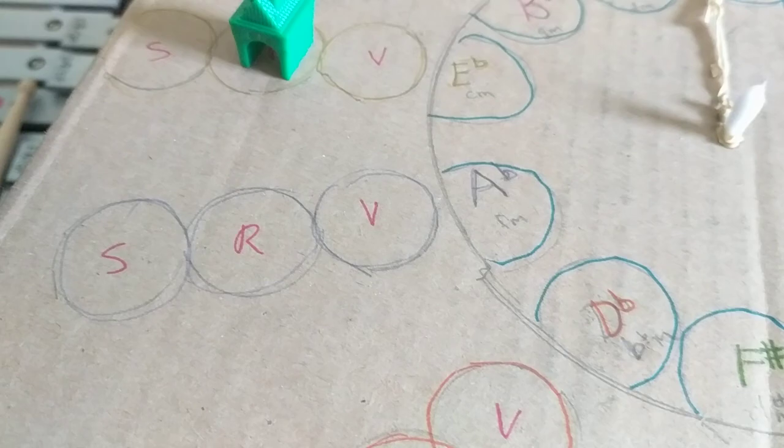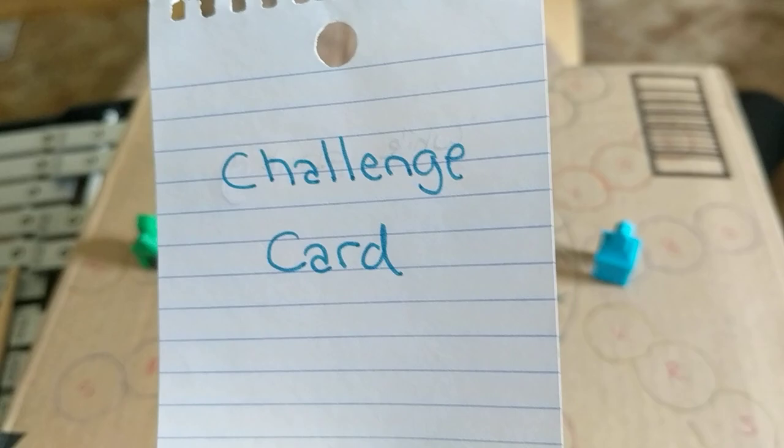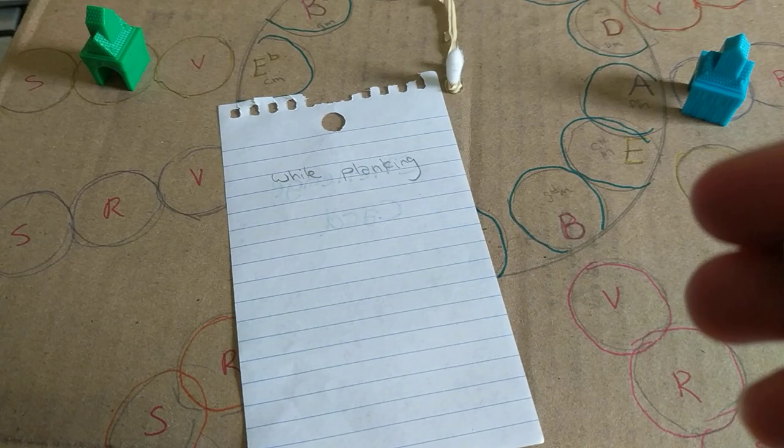But the bear gets to move forward to here because he got it right. All right, now it's the bear's turn. He's got to answer the R question. That's note reading. But guess what? At the beginning of the game, we all got a challenge card. And I think that, I think the bear's going to beat me. So next time it's the bear's turn, I'm going to say, I challenge you, bear. Challenge card. I threw down my challenge card. Let's flip it over. While planking. Oh my gosh.